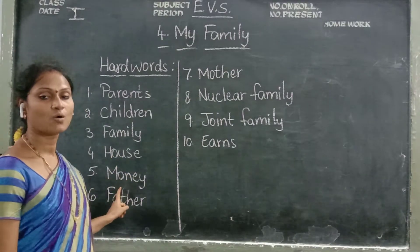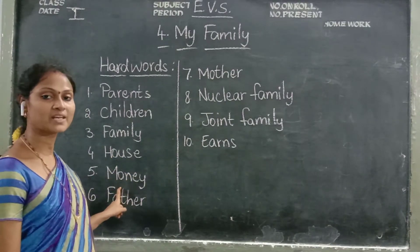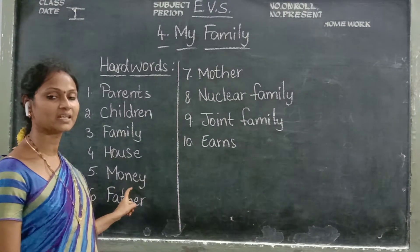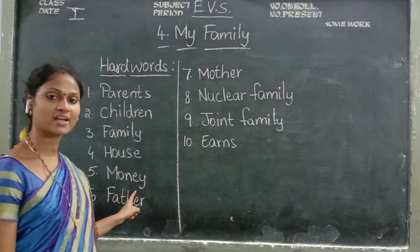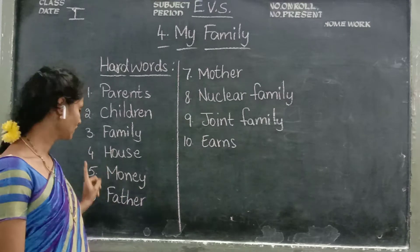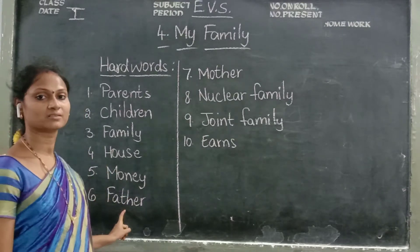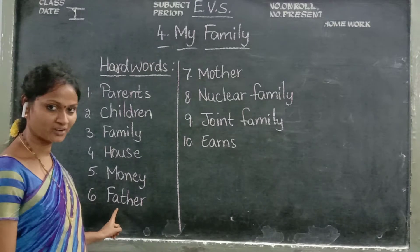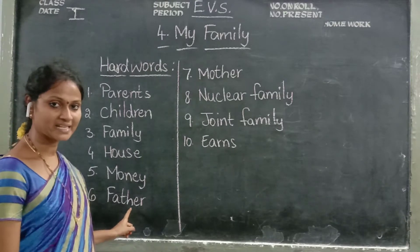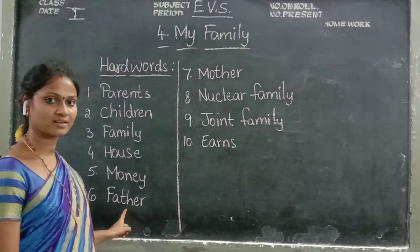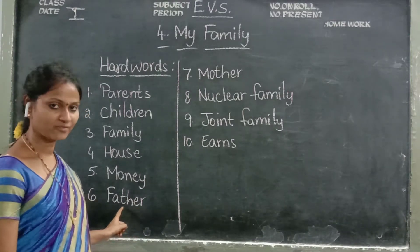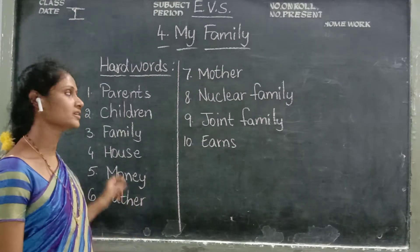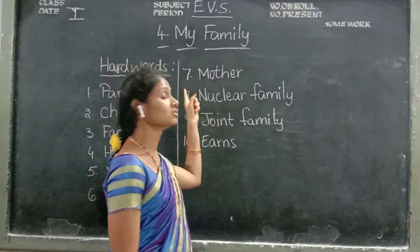Now people want money. What is the spelling of money? M-O-N-E-Y. Money. M-O-N-E-Y. Money. Now the sixth one: father. What is the spelling of father, children? F-A-T-H-E-R. Father. F-A-T-H-E-R. Father.